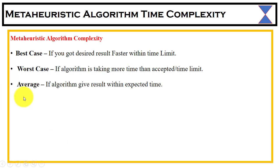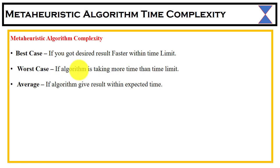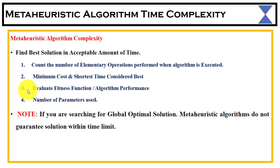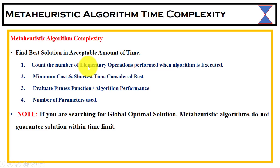We have different types of cases: best case, worst case, and average case. If you get the desired result faster within the time limit, this is the best case. If your algorithm is taking longer than the time limit, this is the worst case. If the algorithm gives good results within the expected time, it is the average case. For meta-heuristic algorithms, we can measure time complexity by the number of parameters used, the fitness function, algorithm performance, minimum cost, and elementary operations performed.